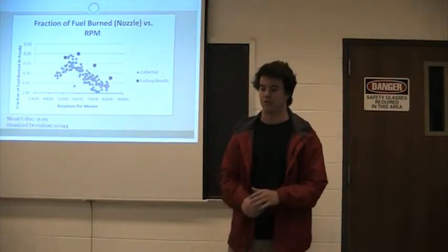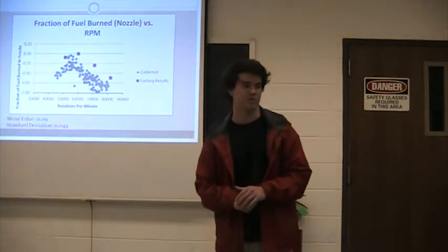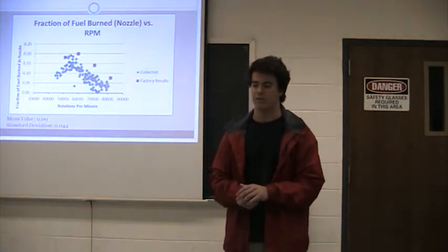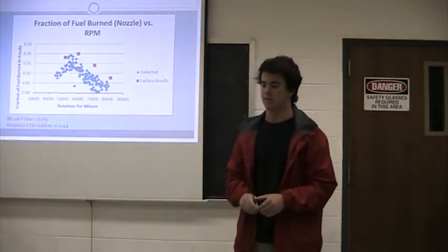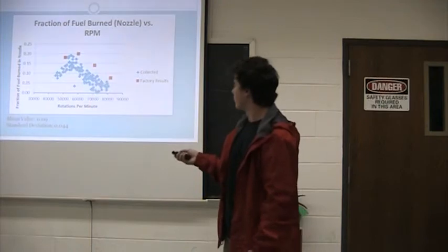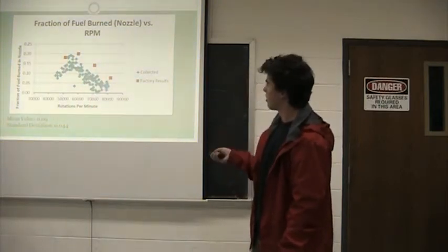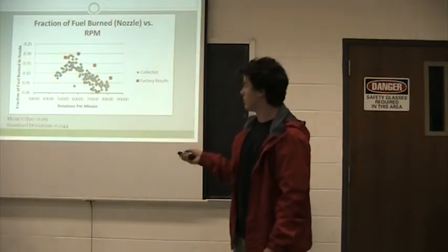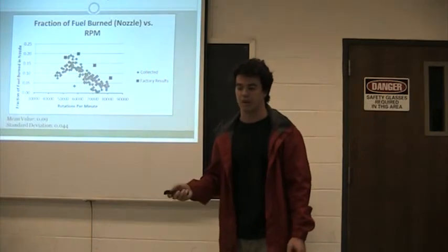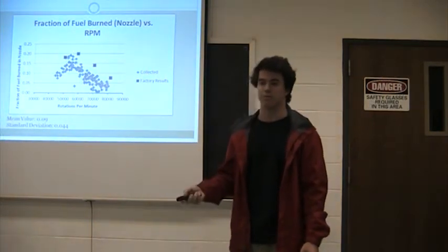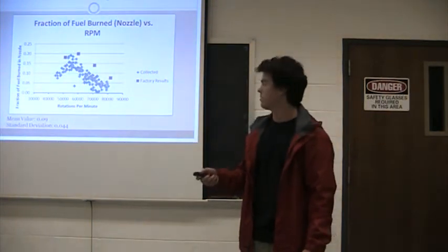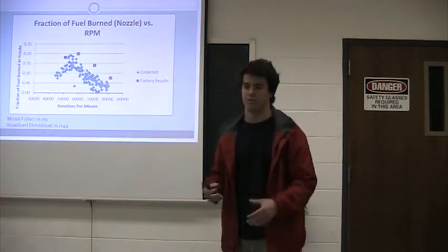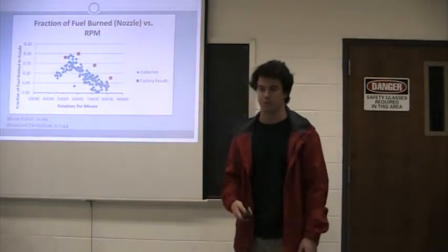Onto the fraction of fuel burned in the nozzle. This is what I thought was interesting. It shows that we have an increase in the fraction of fuel burned at the nozzle from 40,000 to 60,000, then it drops off. Unlike what I expected, I expected it to rise as the RPM grows, showing that just because the high temperature and high pressure coming out of the nozzle, I expected more fuel would be being burned.